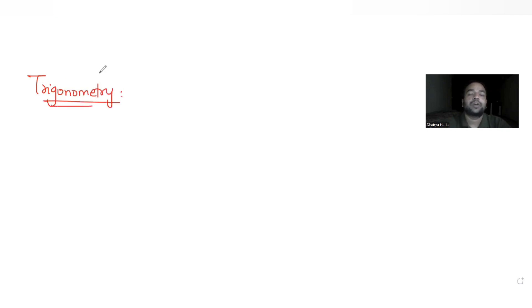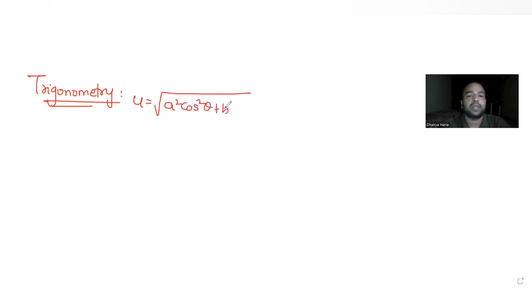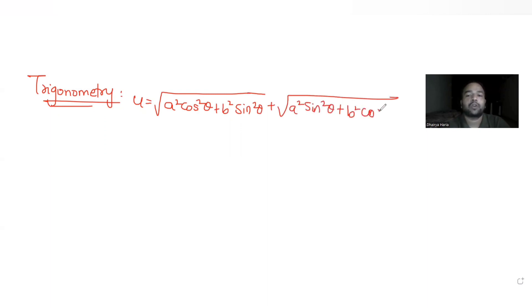So today's question, we are taking this up from the topic of Trigonometry. The question is taken from the year 2004, and it tells us: if u is equal to root of a square cos square theta plus b square sin square theta, plus root of a square sin square theta plus b square cos square theta.